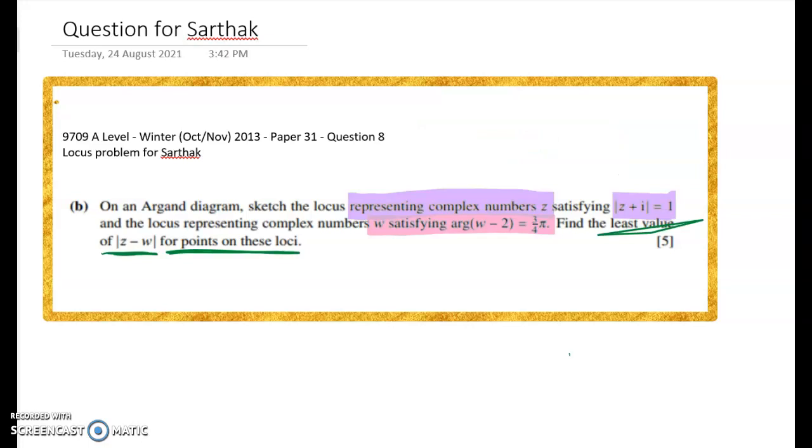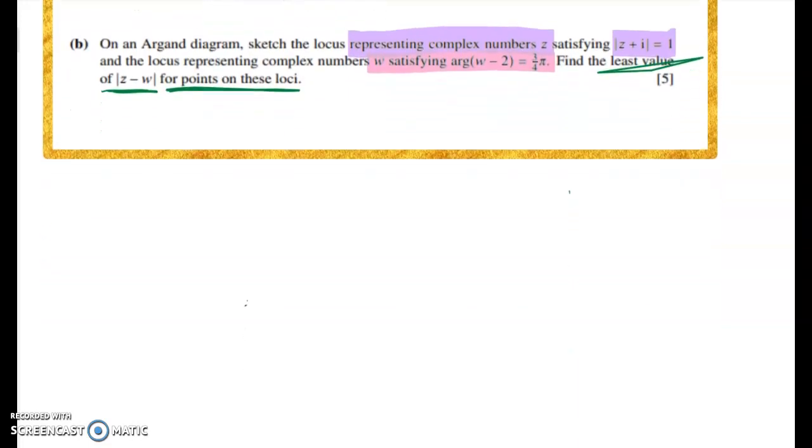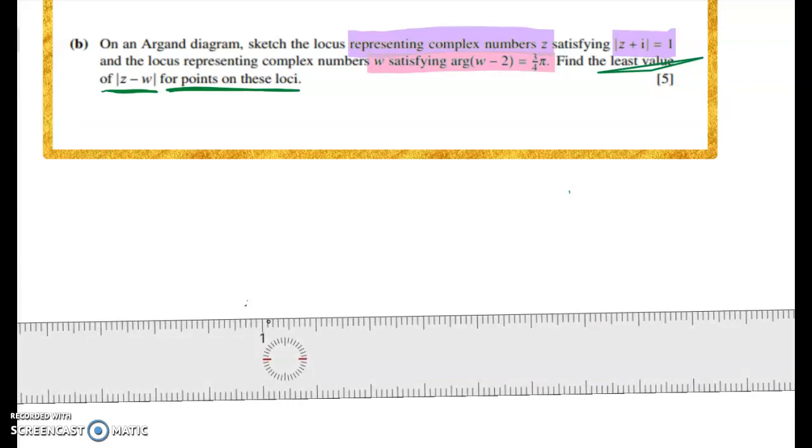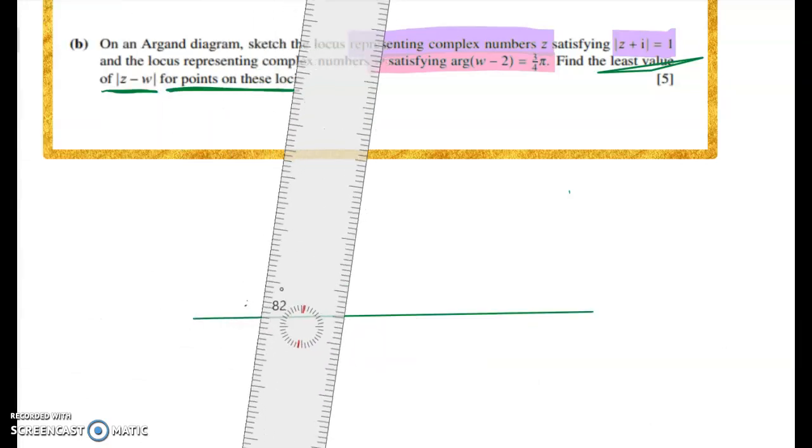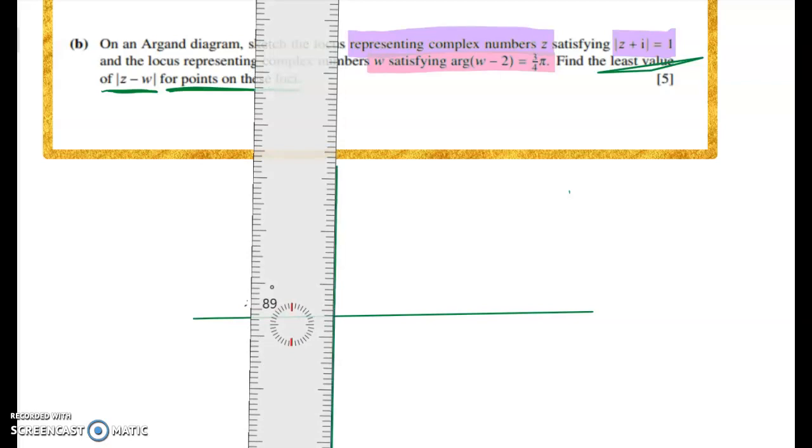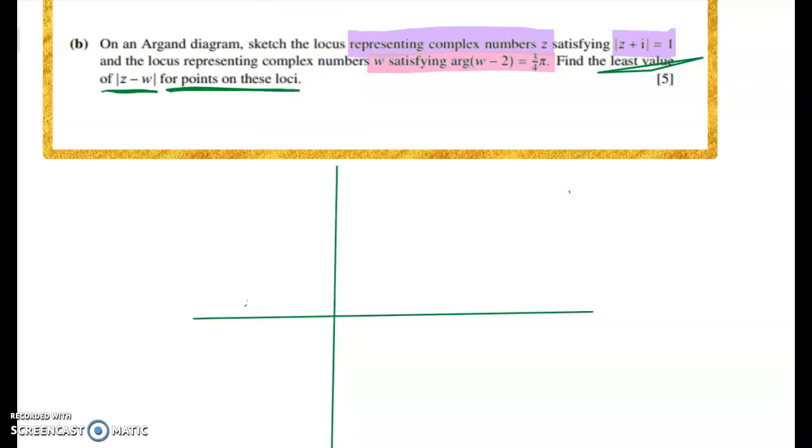So first what I want you to do is pause the video and try to work out those two loci, the z and the w loci, and I want you to draw a really good picture. Now because we're doing A-level here not NCEA level 3, it's fine to go straight to the geometry of the locus. You don't have to let z equal x plus iy. So I'm going to start here by doing a bad graph and then I've got a nice GeoGebra one on the next page.